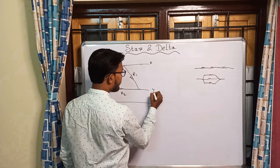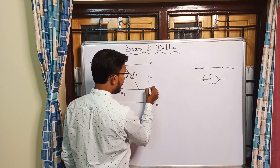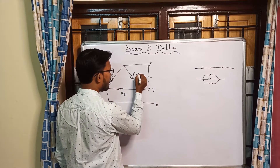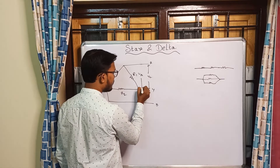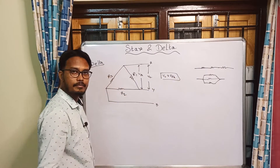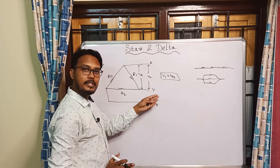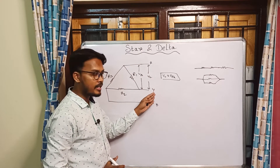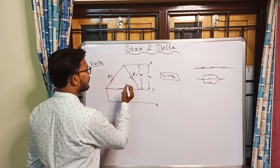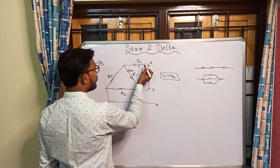In the delta connection, we have R, Y, B terminals. The voltage between R and Y is your line voltage, and the voltage across R1 (across one phase) is your phase voltage. Since each phase is directly connected between two lines, line voltage equals phase voltage: VL equals V_phase.